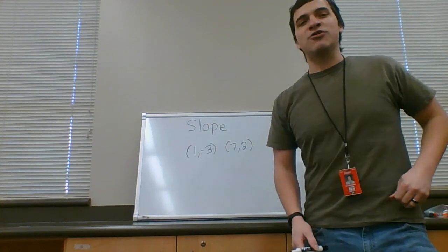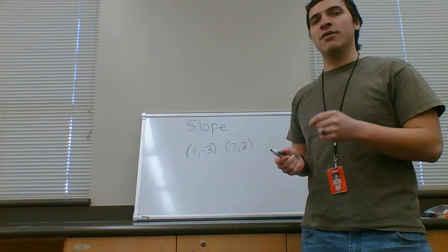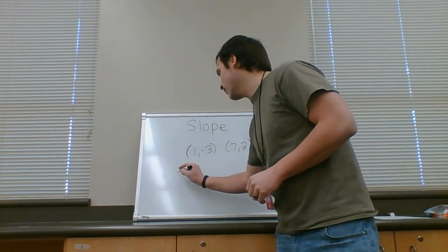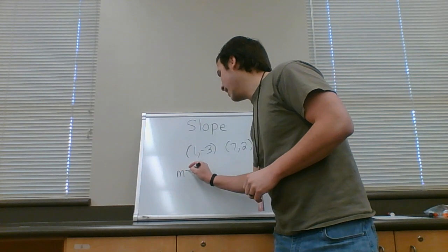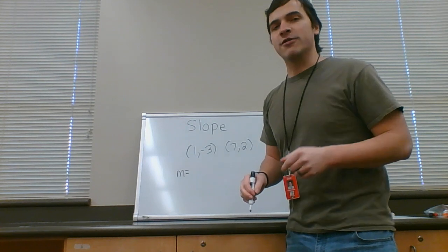Alternatively, you can also just subtract, because the rise is the difference in the y values. The run is the difference in the x values. And remember, slope is rise over run. So m, lowercase m is the mathematical symbol for slope.